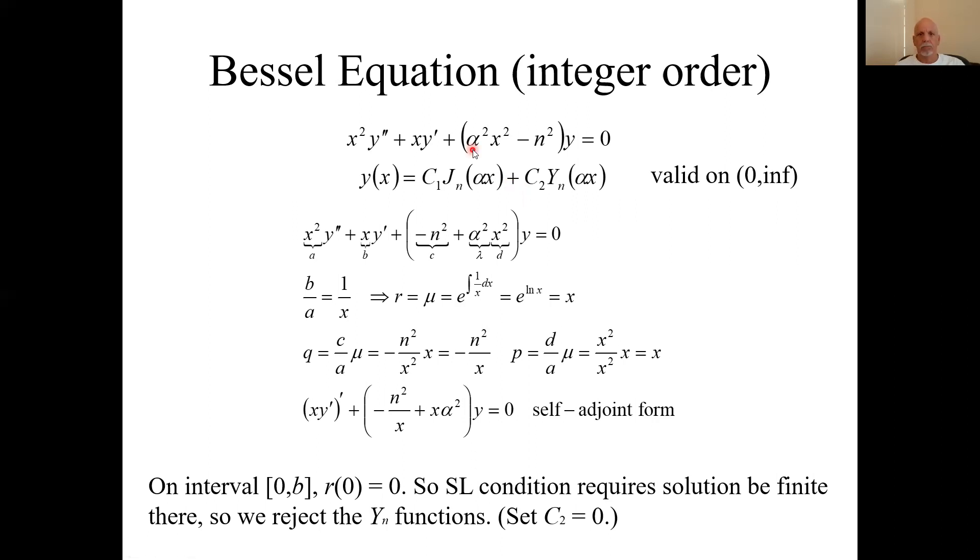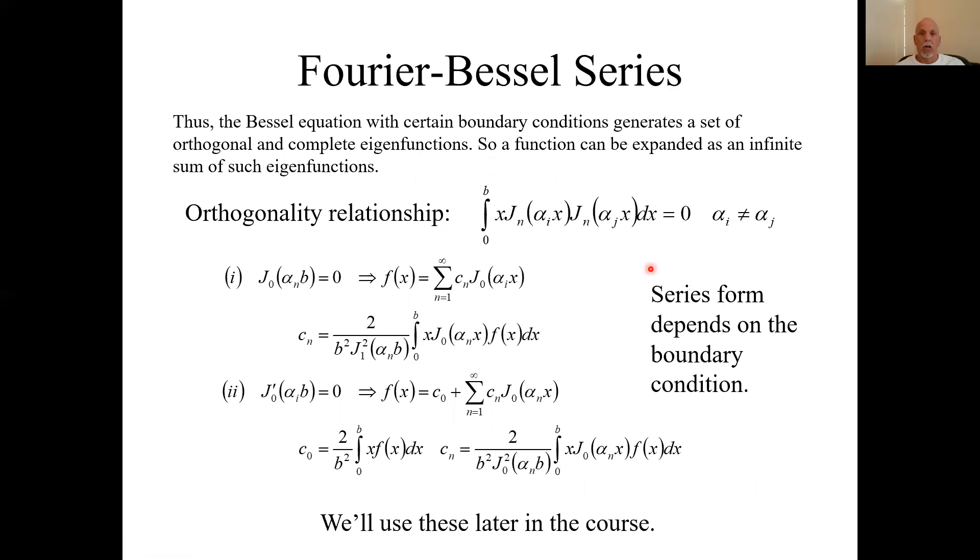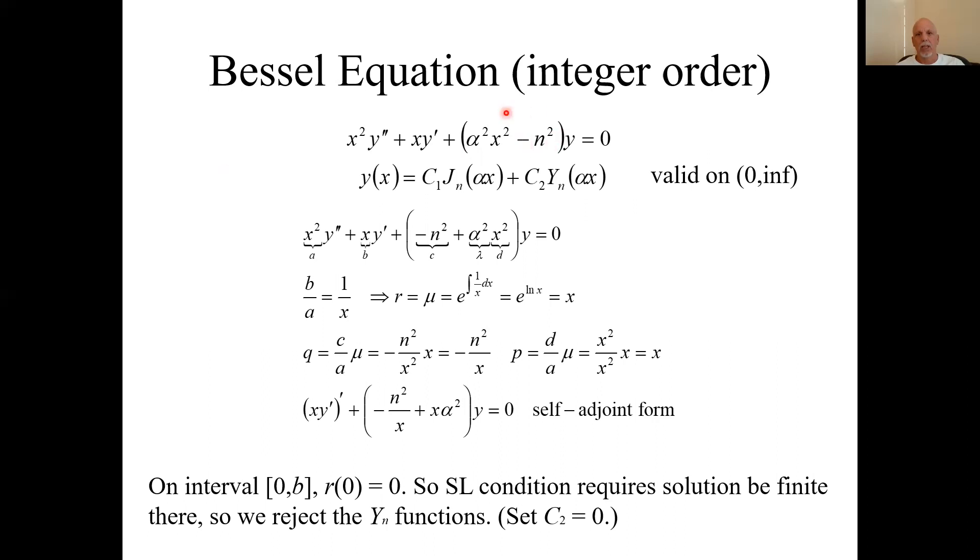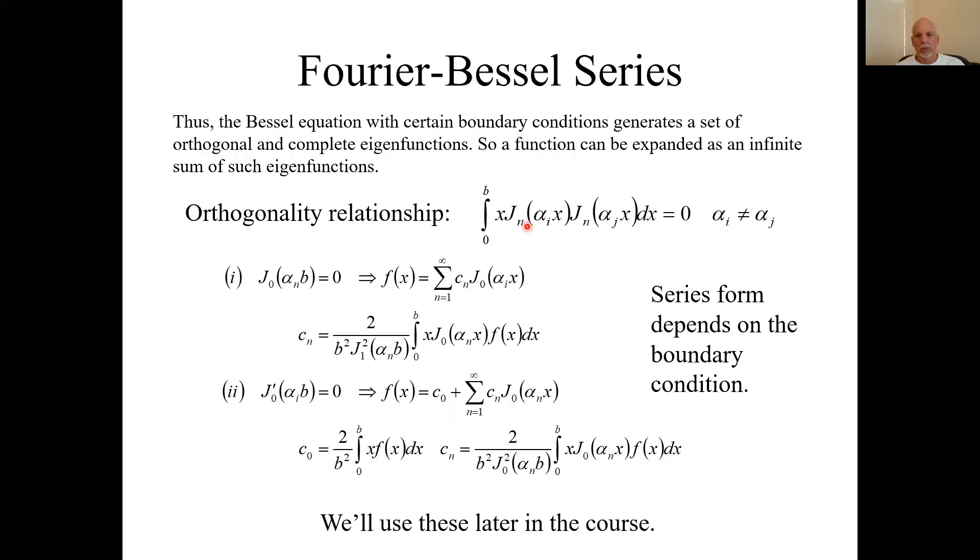What I have below here, I'm kind of cheating. It's going to turn out we're really going to be using this for when n equals zero. So our equations are just going to look like this first part here. We're going to be doing this for J sub zero, so functions of the first kind of order zero.